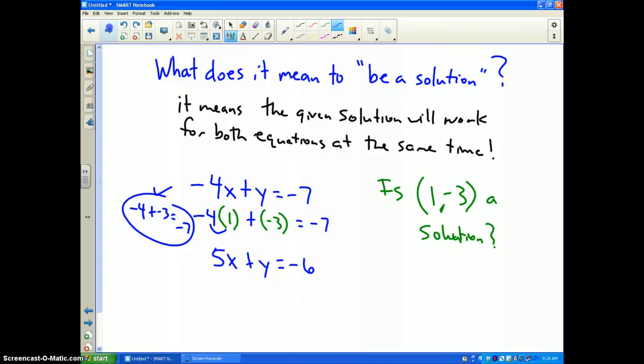But we need to also check the second equation. I am going to write the second one out: 5 times 1 plus negative 3. Does that equal negative 6? Well, if I write this out, 5 times 1 is 5 plus negative 3. Does that equal negative 6? No, it doesn't. That does not work.